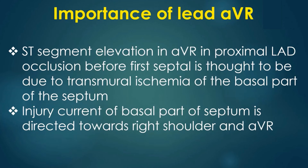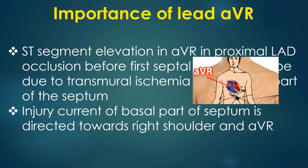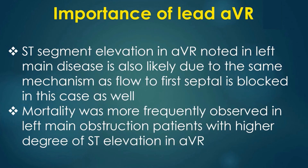ST segment elevation in AVR in proximal LAD occlusion before the first septal is thought to be due to transmural ischemia of the basal part of the septum. The injury current of the basal part of the septum is directed towards the right shoulder and AVR. ST segment elevation in AVR noted in left main disease is also likely due to the same mechanism, as flow to the first septal is blocked in this case as well.